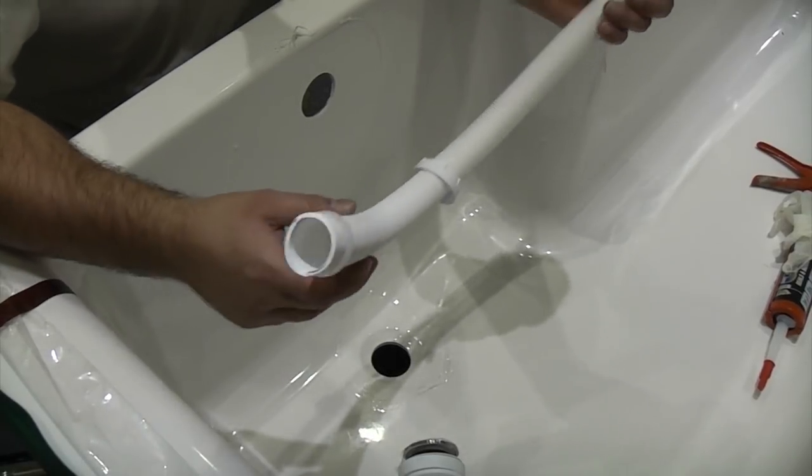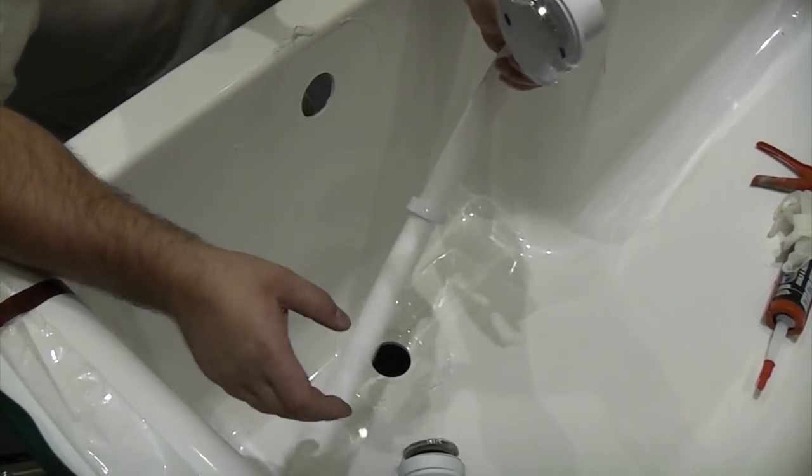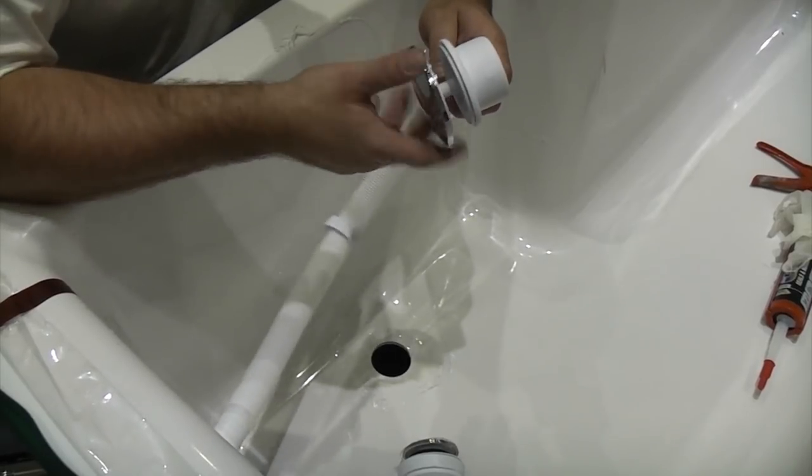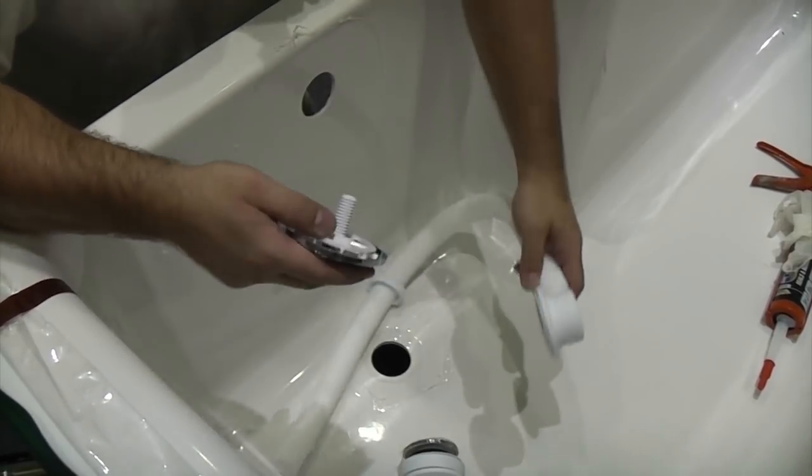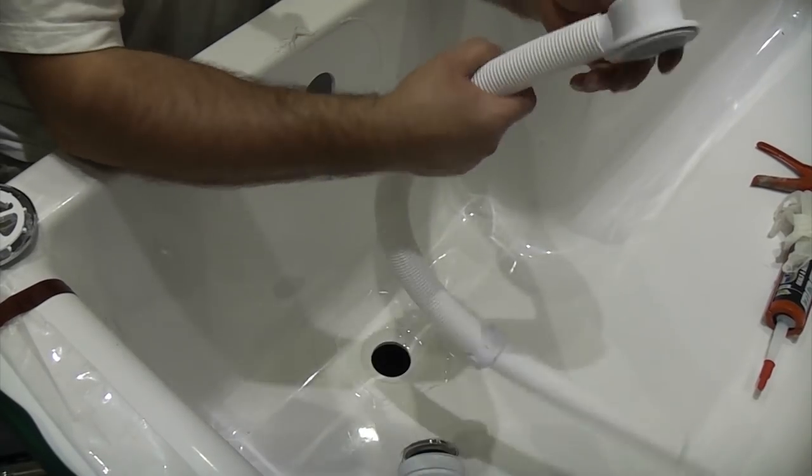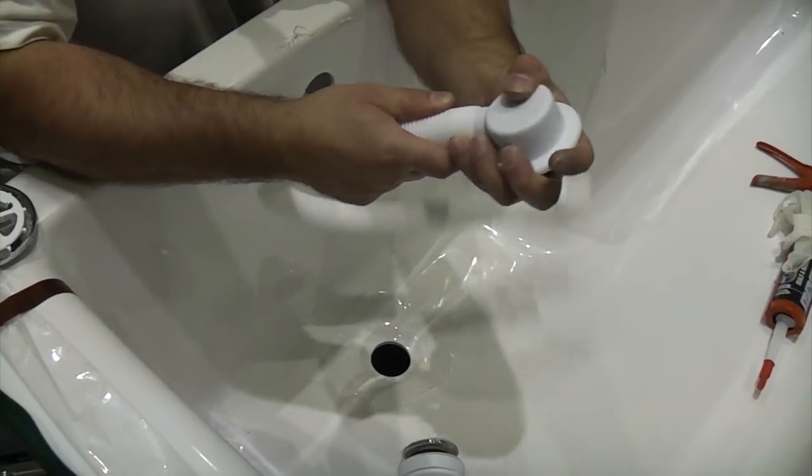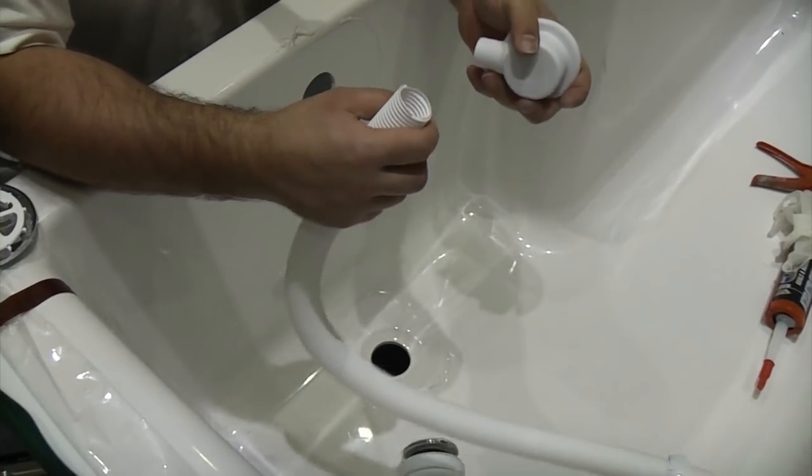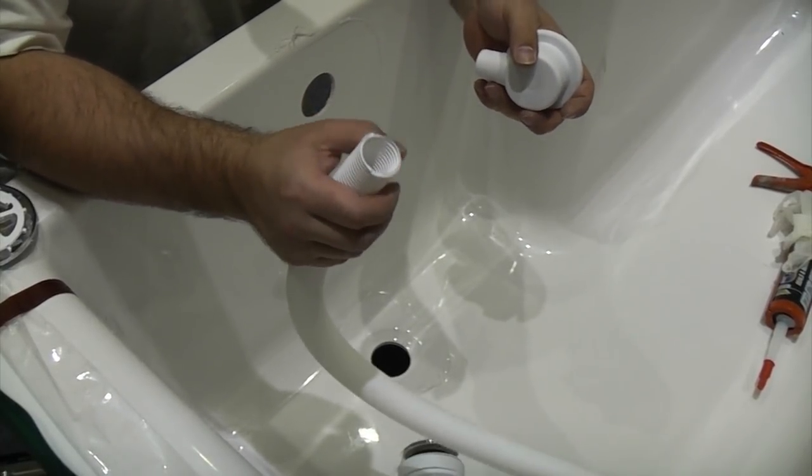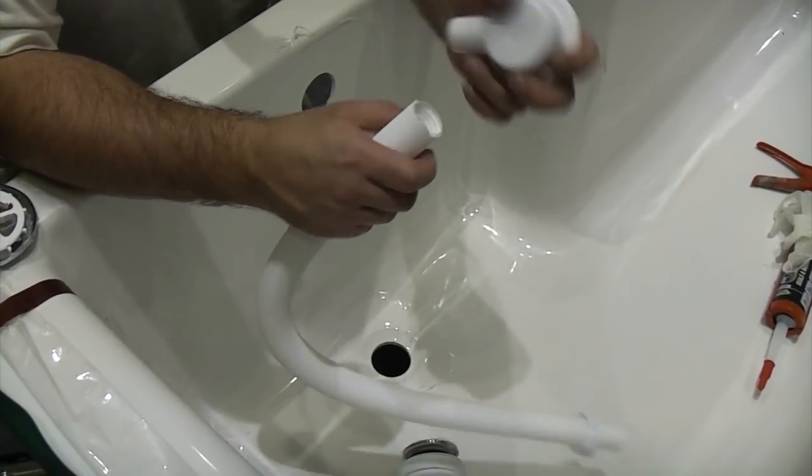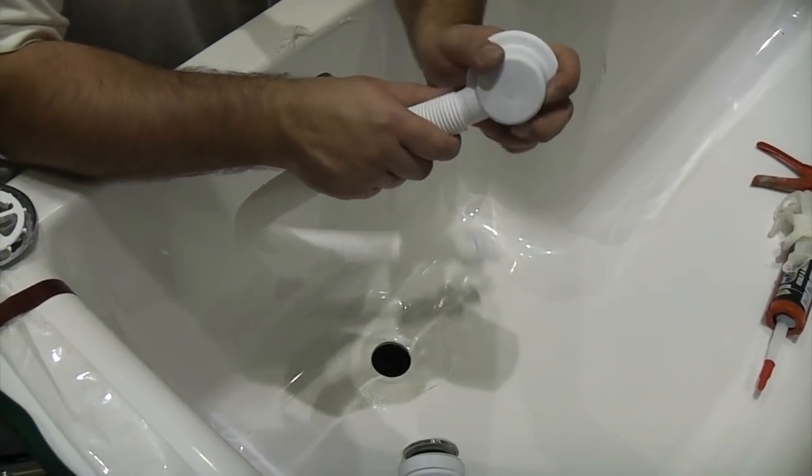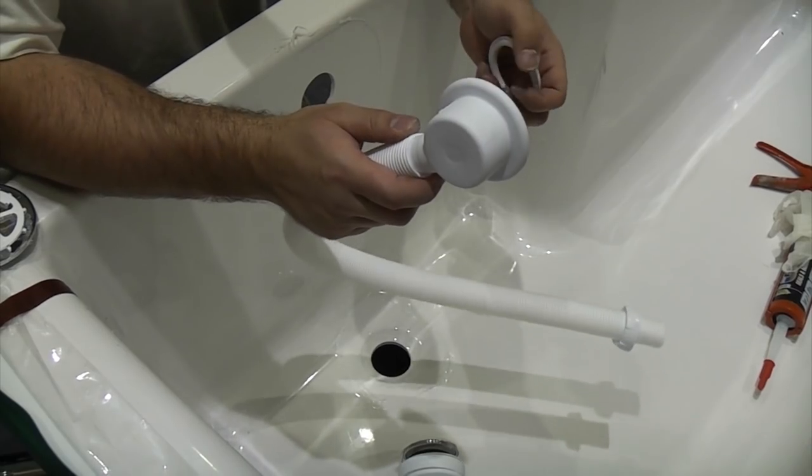We do need to cut this hose to length once we get it in position, but before we do that, we need to unscrew this part. If you look at the top here, that's just pushed on—it's push fit. Personally, I don't like taking chances with things like that, so I'm going to put some plumber's gold on the inside and push that back on. Then there's absolutely no chance of that ever popping back off accidentally.